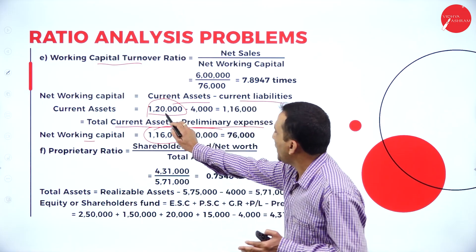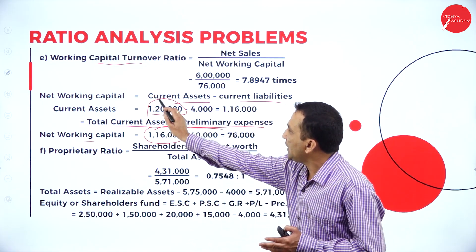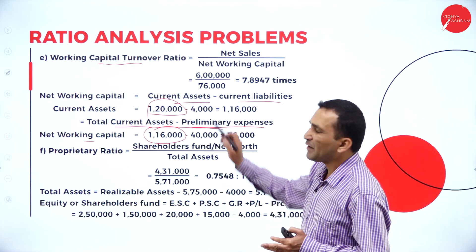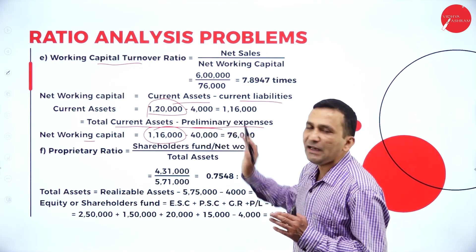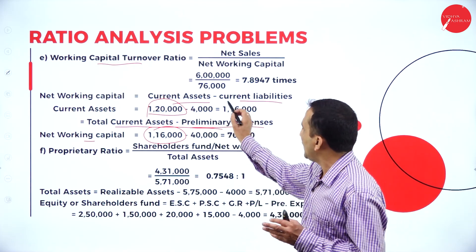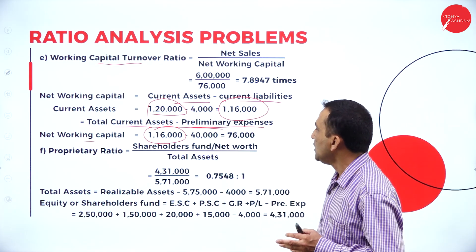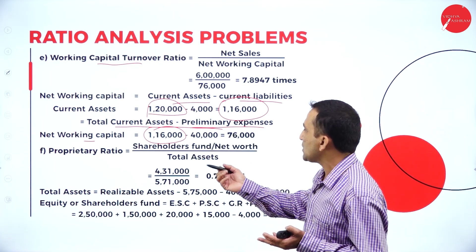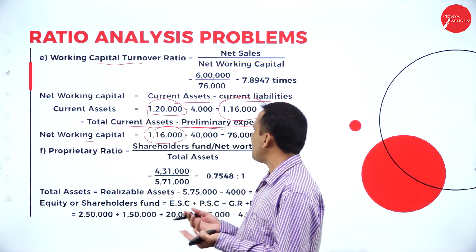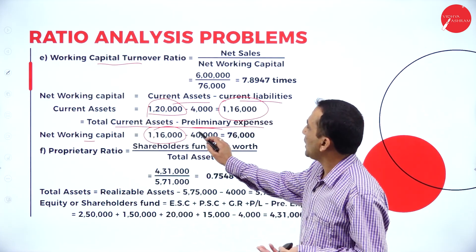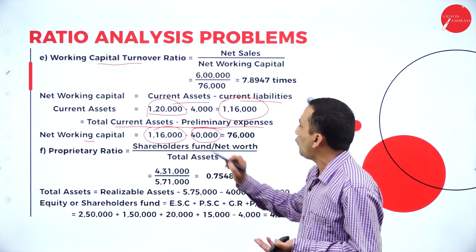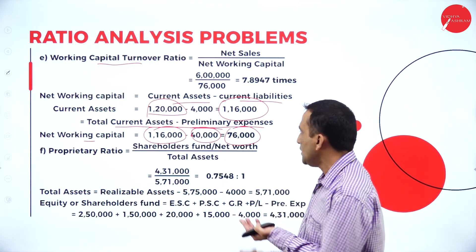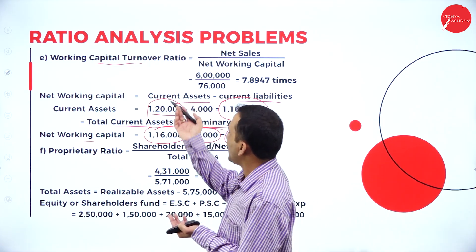Net working capital: from 1,16,000, subtract current liability 40,000 — we get finally 76,000. Now we can easily simplify the working capital turnover ratio.